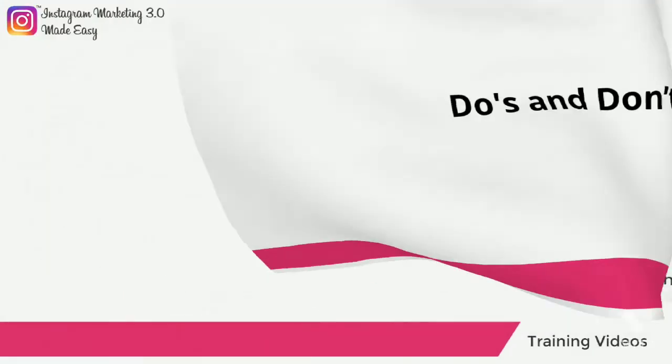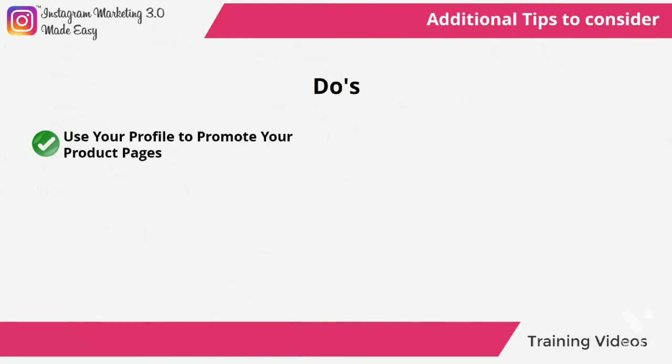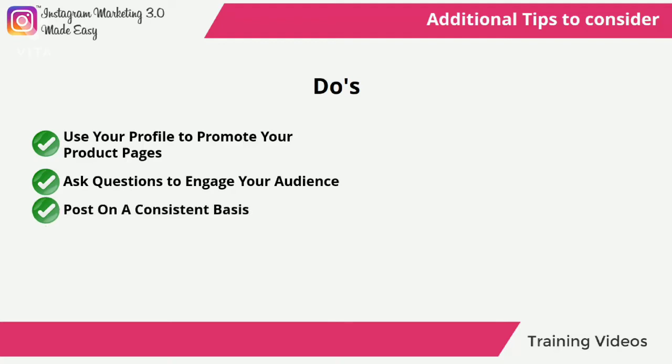Do's and Don'ts — Do's. Use your profile to promote your product pages. The website field in your profile is a piece of overlooked Instagram real estate that you can use to get extra traffic to your product pages, so make sure to use it to promote profitable sections of your site. Ask questions to engage your audience, as questions basically force people to weigh in with their opinions. Post on a consistent basis — posting on a schedule will ensure that your audience comes back for more on a timely basis.